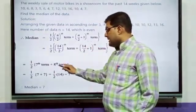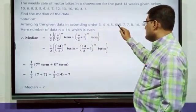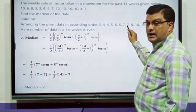7th term and 8th term from the ascending order you have to check. 1st term, 2nd term, 3rd term, 4th term, 5th term, 6th term, 7th term and 8th term. Both the terms are 7.